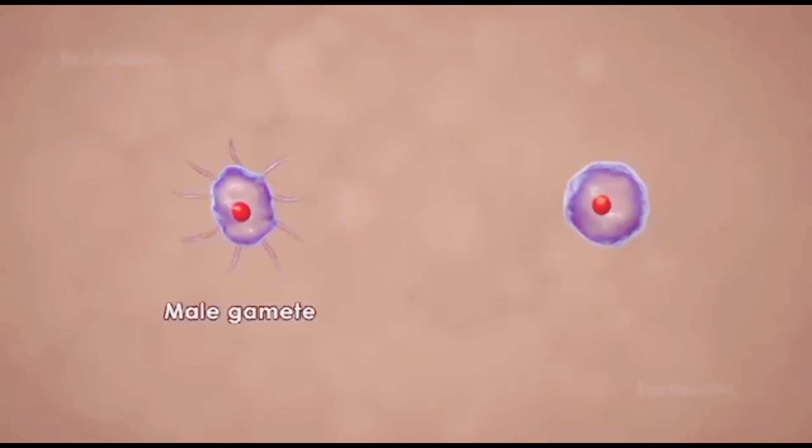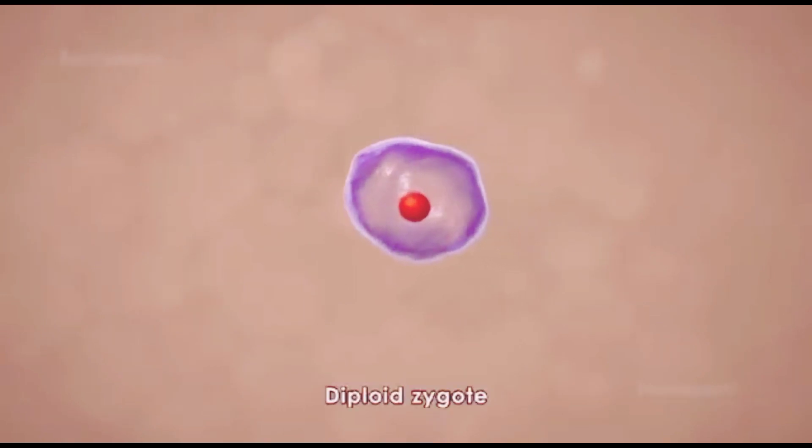Inside the mosquito's gut, the gametocytes will differentiate as spindle-shaped male and spherical female gametes. The gametes will fuse to form a diploid zygote in the stomach of the mosquito.